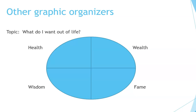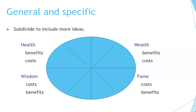You can make a circle or an oval to gather all of your ideas together. Let's go from general to specific here. Subdivide your ideas to include more of them — take this oval or circle diagram and add different ideas to it. You can talk about the benefits and costs of health, wealth, wisdom, and fame, putting more of your ideas within the oval or circle diagram.